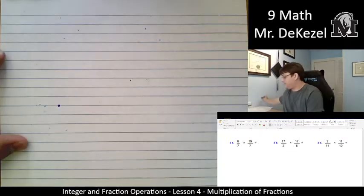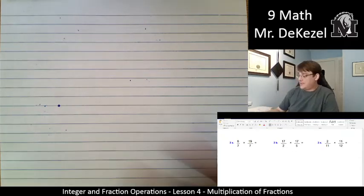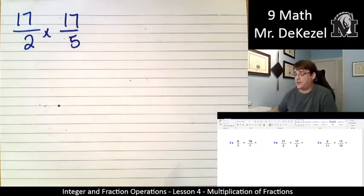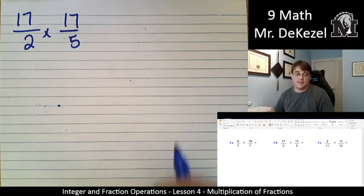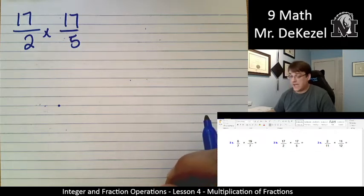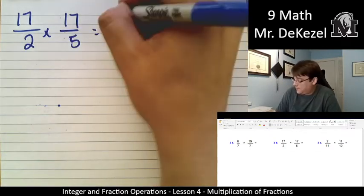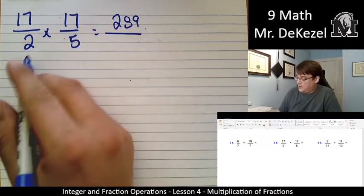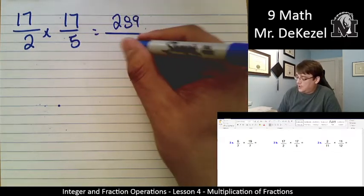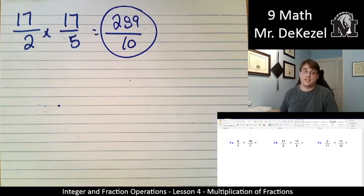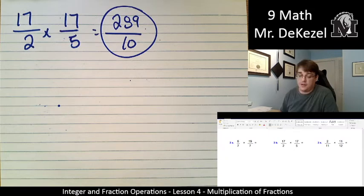17 times 17 over 2 times 17 over 5. 17 times 17, was it 289, I believe? When we square 17. And then 2 times 5 is 10. That is as low as that will be able to go. They are not both even. They both don't end in 5 or 0.